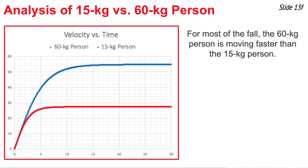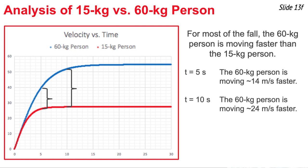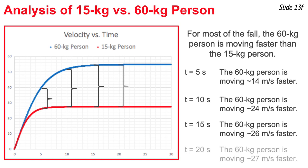We can summarize like this. For most of the fall, the 60 kg skydiver is falling faster. For instance, if you look at the graph at 5 seconds, there's a 14 m per second difference in speed. At 10 seconds, there's about a 24 m per second difference in speed. At 15 seconds, about a 26 m per second difference. At 20 seconds, there's about a 27 m per second difference in speed. So what we can tell is that throughout the fall, this more massive skydiver is always moving faster, always accelerating towards a greater terminal velocity, and that explains why more massive objects fall faster than less massive objects.